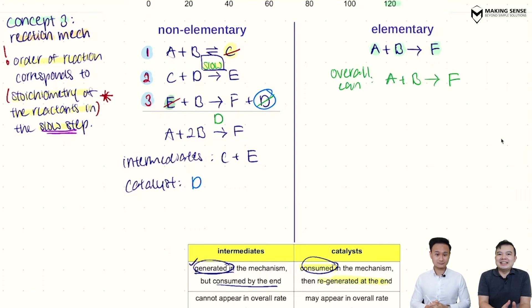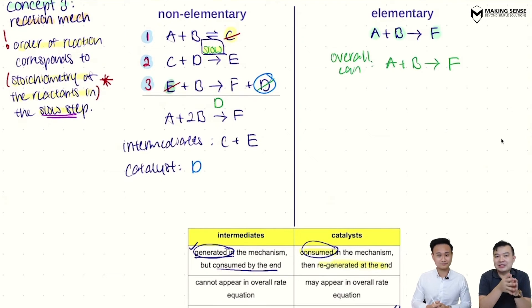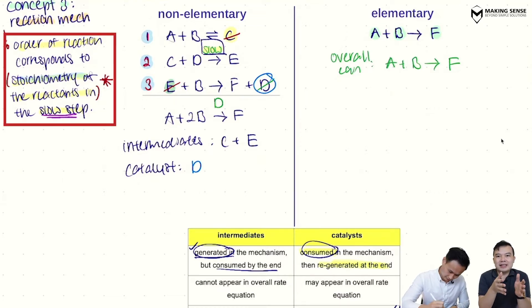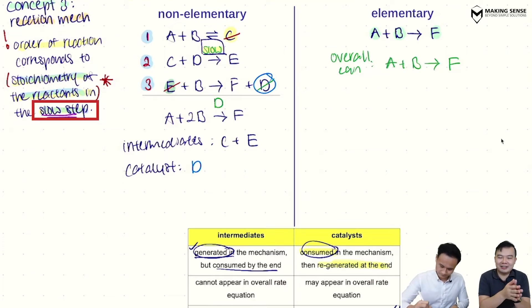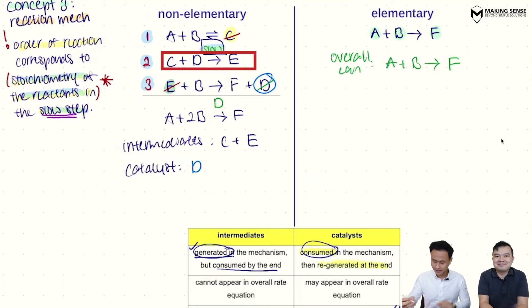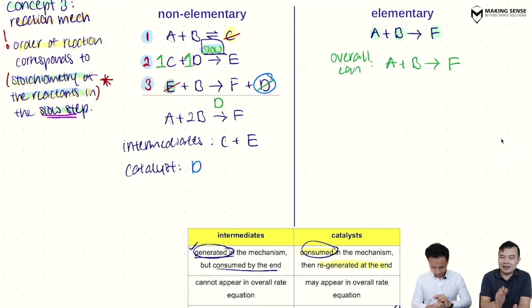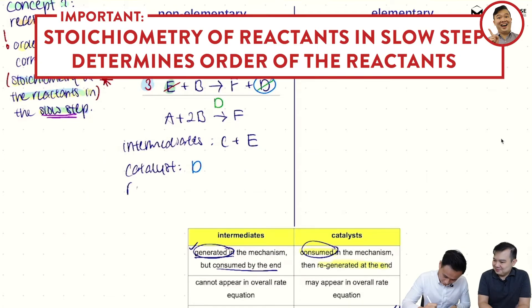So that's skill number two, recognizing who's an intermediate and who's a catalyst. So the third skill that's important over here is, turns out we are able to relate the rate equation to the mechanism. So that's a very important skill that you must pick up. So we have it on the top left-hand corner of our screen. That's the most important statement. So this statement tells us that in the reaction mechanism, I'm always going to zoom in into the slow step first. And we're going to pay attention to the stoichiometry of the reactants.